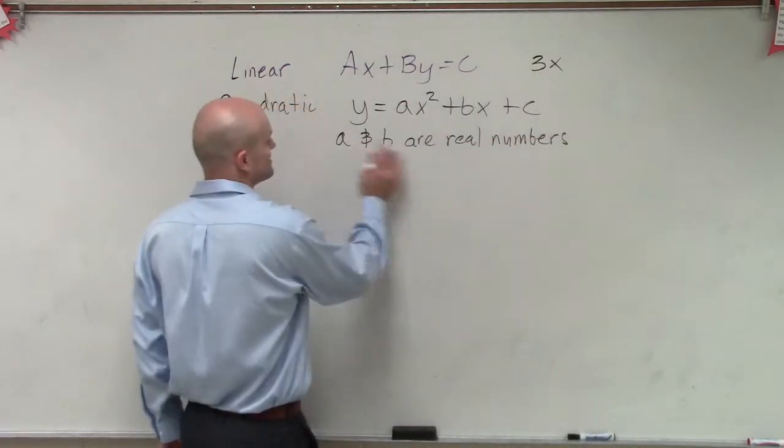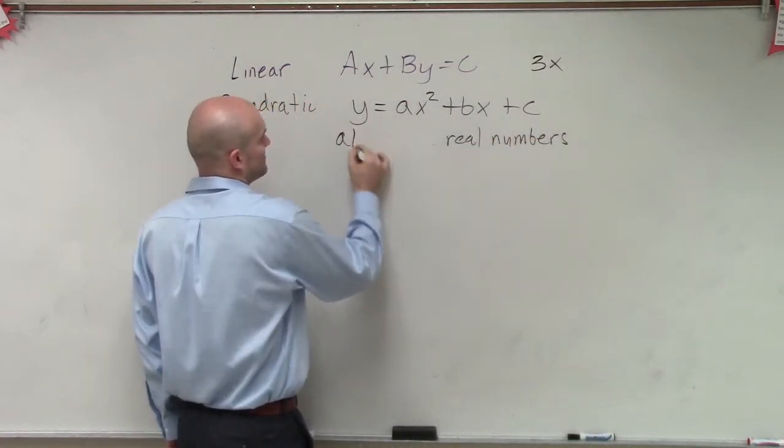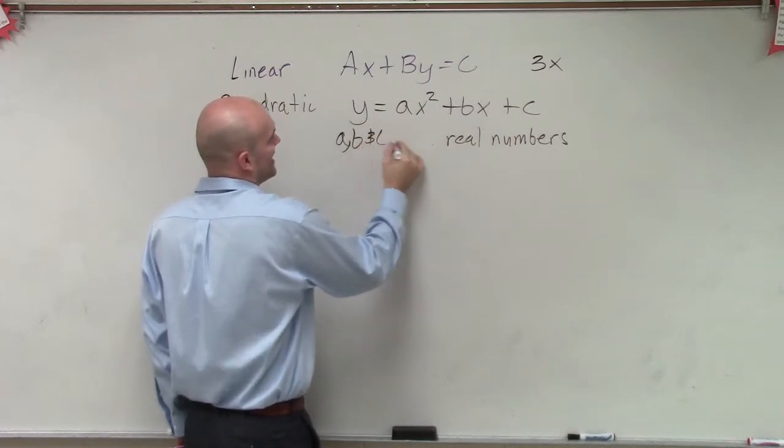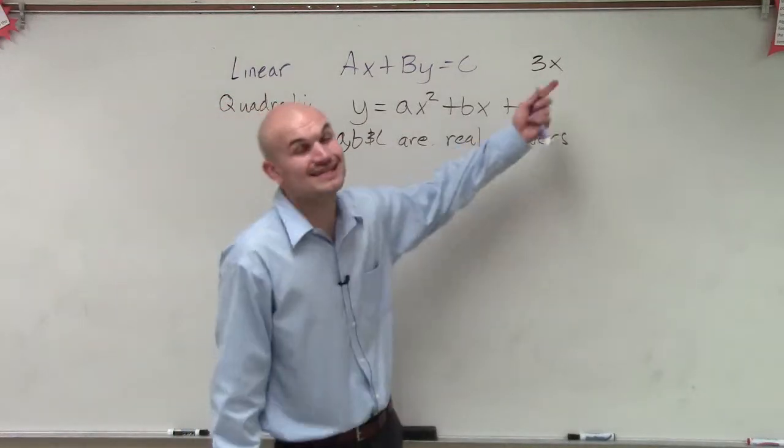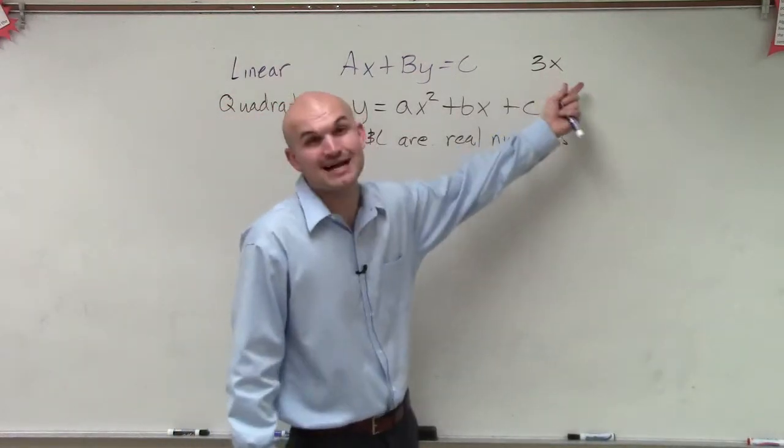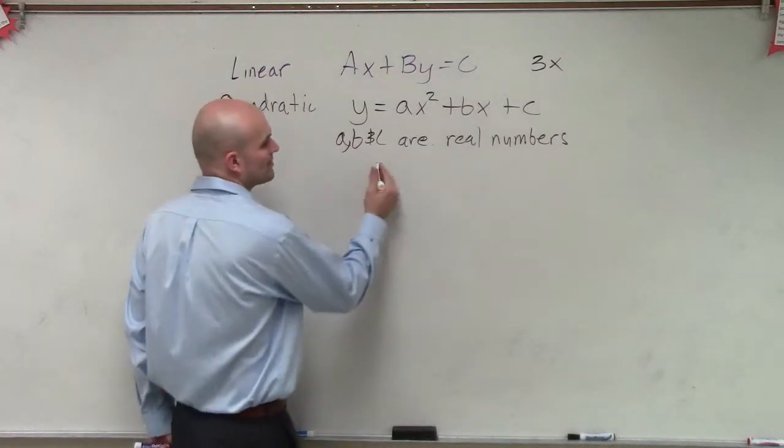And c - I'm sorry, I don't know why I didn't say c - a, b, and c are real numbers. So remember, c is going to be our constant. That just means it's not going to be attached to a variable factor. And then the most important thing about our standard form is a cannot equal 0.